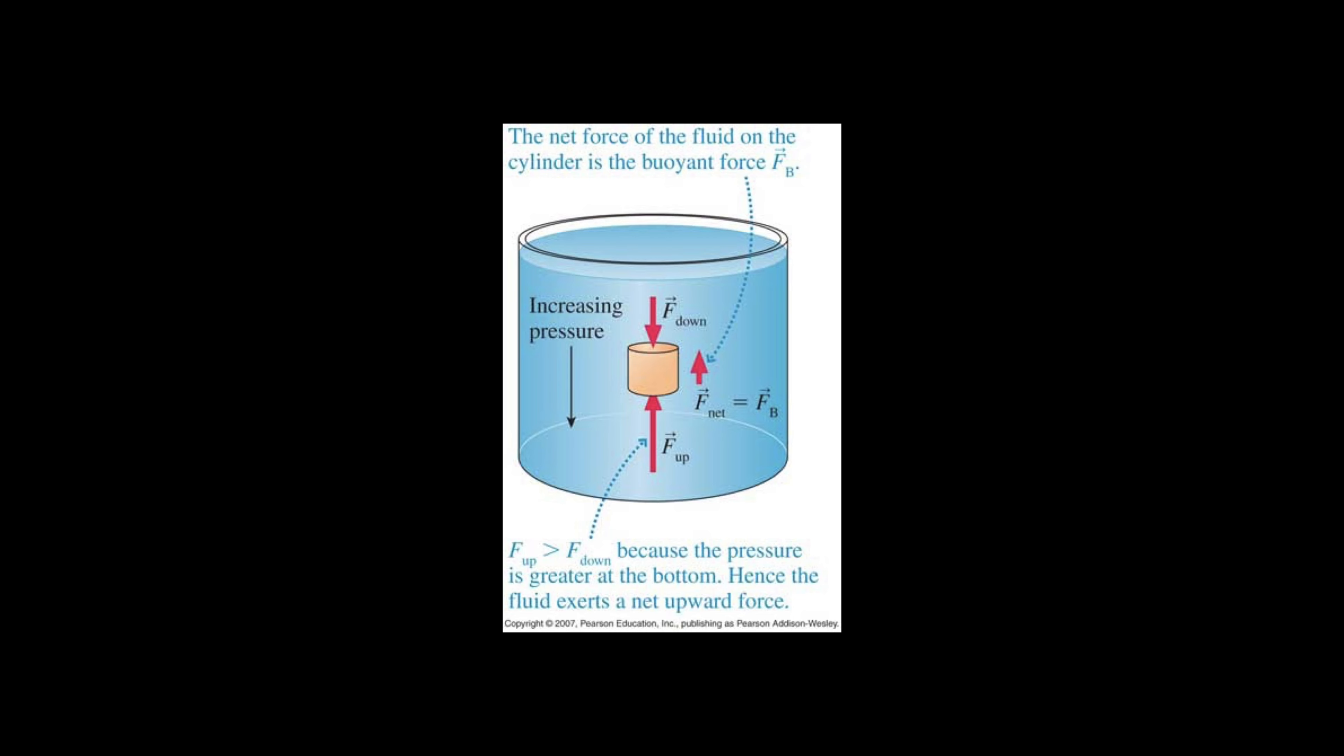If the object is more dense than water, then it has more weight than the water would have that would have been there and it can overcome the upward pressure in the water and that's why it sinks. If it's less dense than water, it doesn't have enough weight to compensate for the difference in pressure between the downward force and the upward force, therefore it starts to move up because it can't overcome the upward pressure in the water from below.